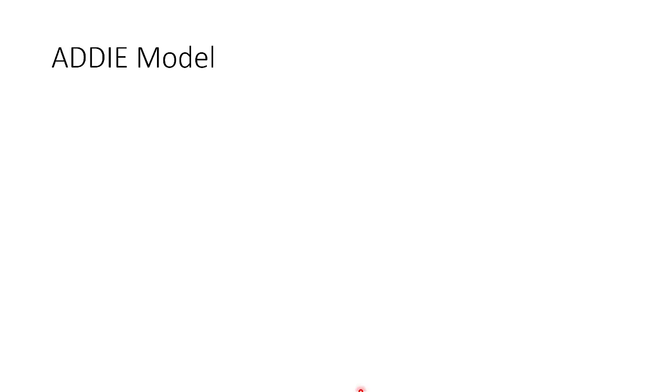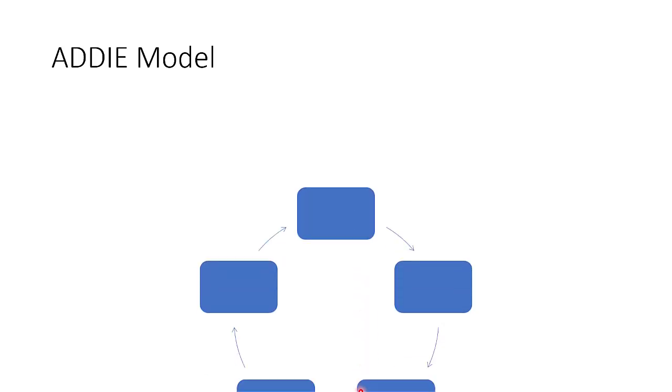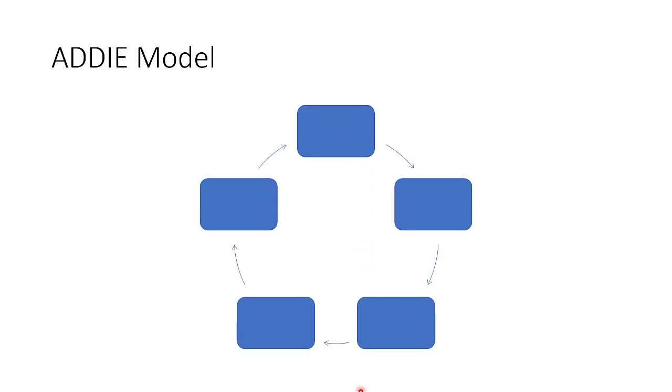Now, the ADDIE model — what is it all about? ADDIE has five stages. ADDIE is cyclical; it developed from the linear to the cyclical, and it is continuous. Each letter in ADDIE represents an element. You have five letters: A, D, D, I, E — and each letter represents an element.